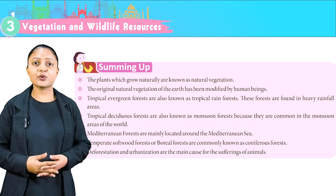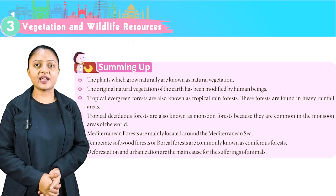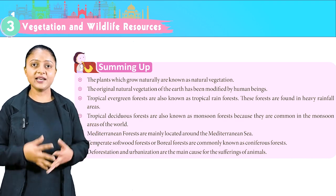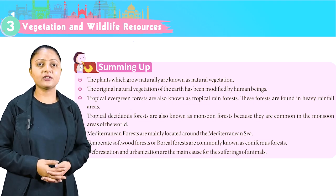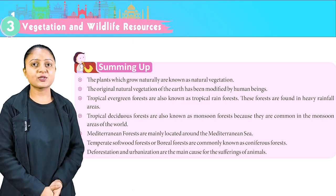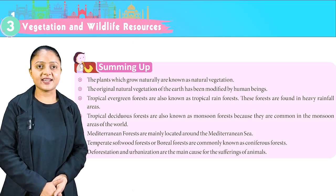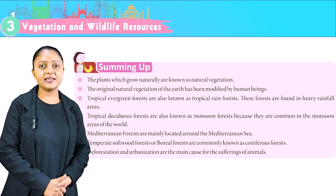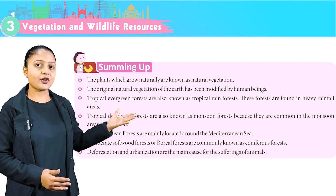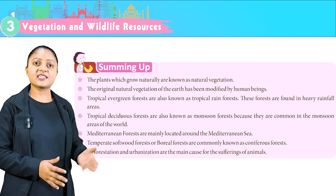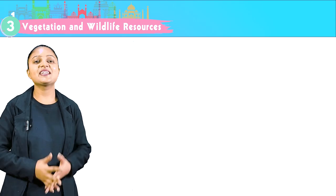Summing up: plants which grow naturally are known as natural vegetation. The original natural vegetation of the Earth has been modified by human beings. Tropical evergreen forests, also known as tropical rainforests, are found in heavy rainfall areas. Tropical deciduous forests are also known as monsoon forests. Mediterranean forests are mainly located around the Mediterranean Sea. Temperate softwood forests or boreal forests are commonly known as coniferous forests. Deforestation and urbanization are the main cause of the sufferings of animals. Thank you class — let's meet in the next chapter.